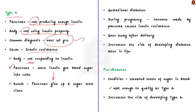The third type is gestational diabetes, which develops during pregnancy. It usually disappears after the baby is born, but it increases the risk of developing type 2 diabetes later on. When a person is pregnant, the placenta makes more hormones. In some women, these hormones can cause insulin resistance, which leads to high blood sugar.